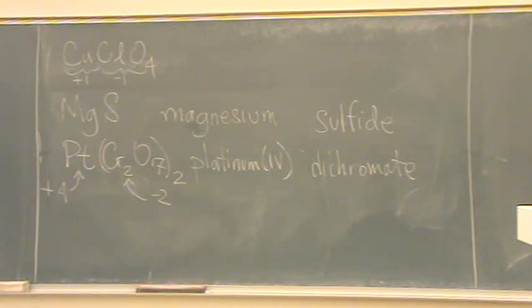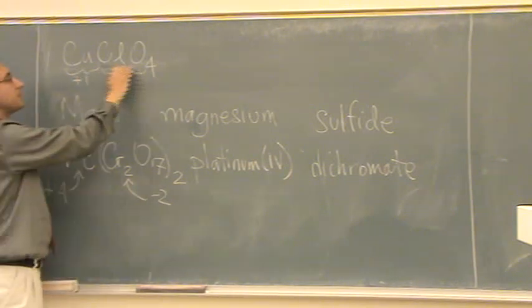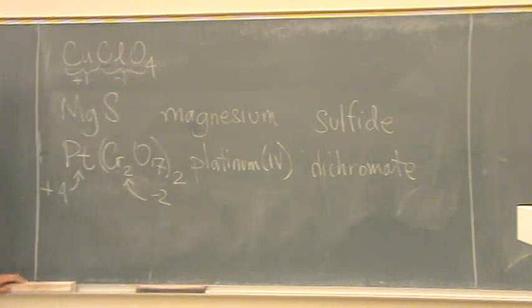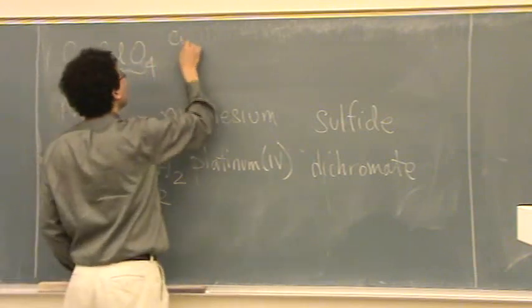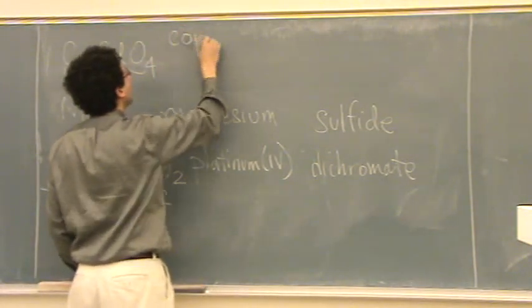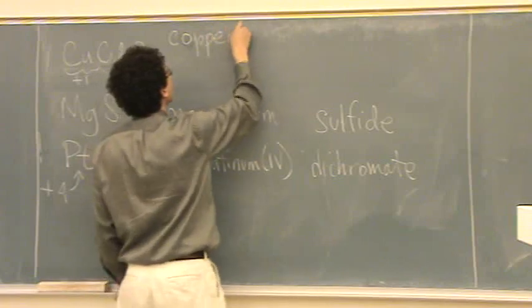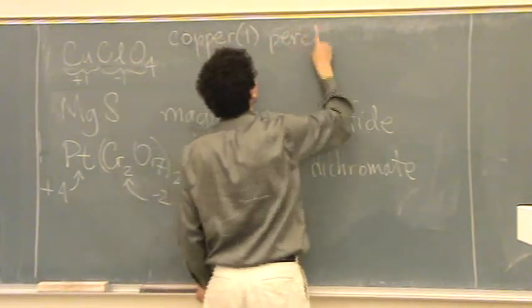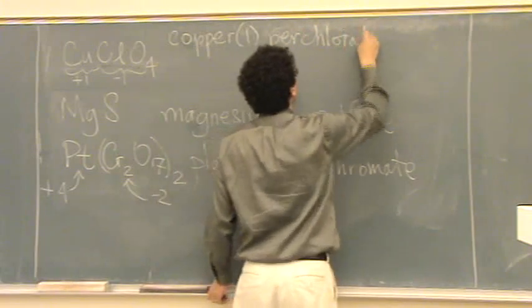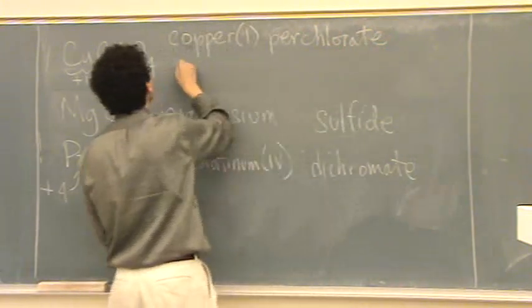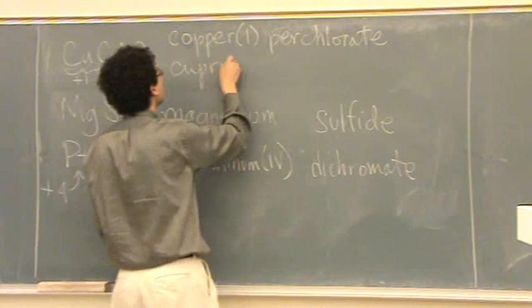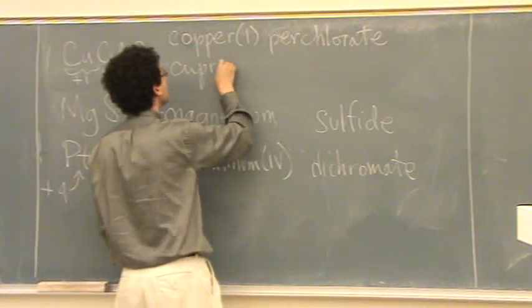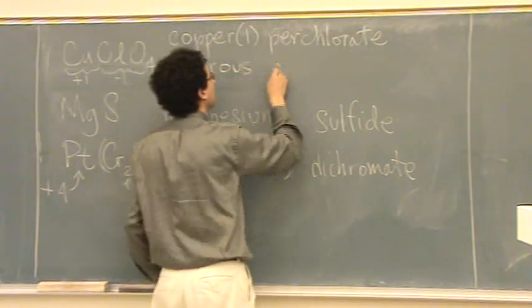Copper can have two first names, either, in this case, cuprous or copper 1. What's the name of the ClO4? Perchlorate. So, we've got either copper 1 perchlorate, or cupric, oh no, cuprous perchlorate.